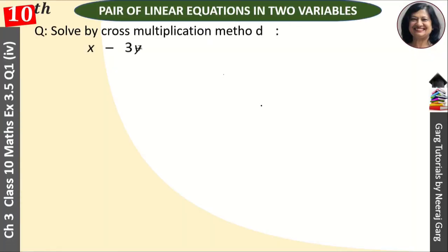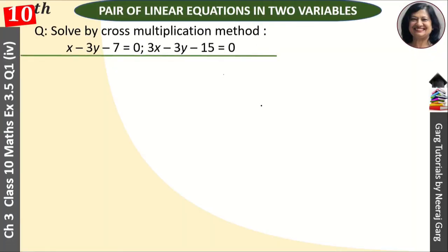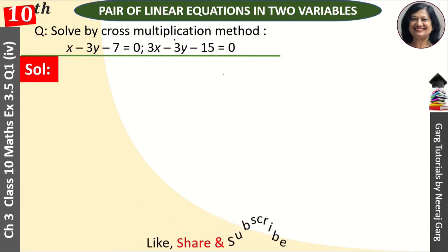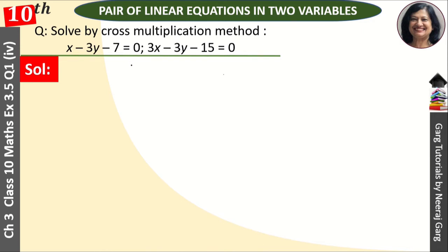Hi, this is Neeraj Garg and you are watching Class 10th Chapter 3, Pair of Linear Equations in Two Variables, Exercise 3.5. Solved by cross multiplication method: x minus 3y minus 7 is equal to zero. First of all, cross multiplication method is used when we have a unique solution.